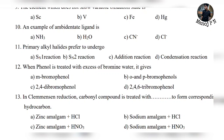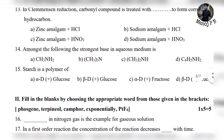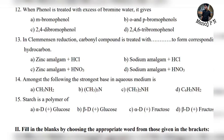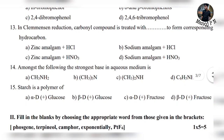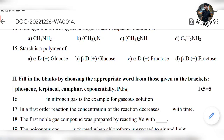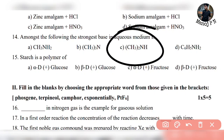Primary alcohol prefers SN2 reaction — direct question. When phenol is treated with excess bromine water, it gives 2,4,6-tribromophenol — simple answer. Clemmensen reduction: a carbonyl compound is treated with zinc amalgam plus HCl to form the corresponding hydrocarbon. Question 14: the strongest base in aqueous medium — the answer is option C. Question 15: starch is a polymer of — answer in the comments section. Thanks for watching, happy learning!